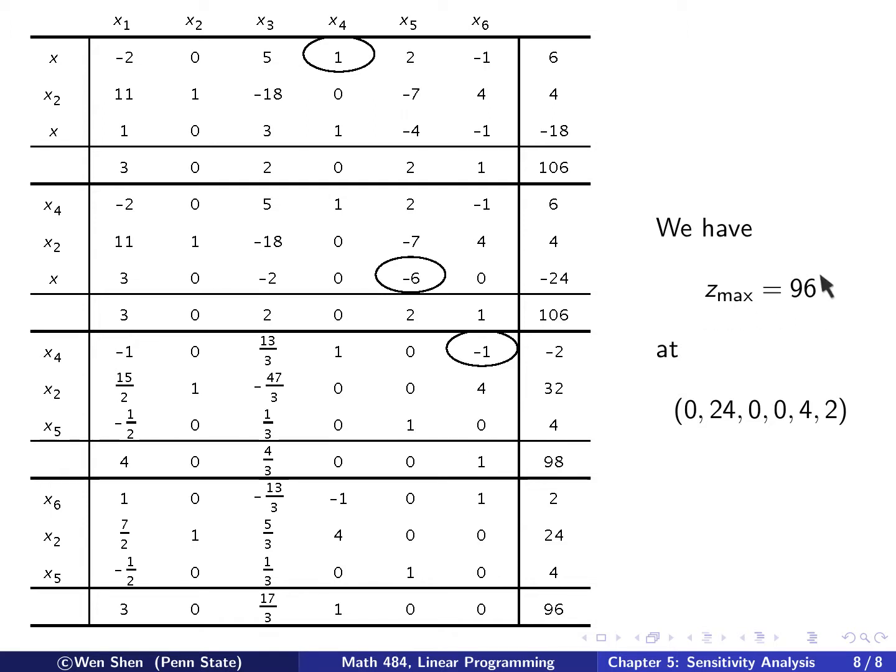Then we can conclude. We write out the Z max, the optimal value, is here. And it's obtained at these three will be X6, X2, X5, these three values. And the other X's are 0. So you write out here, X2, X5, X6. And these are 0. And that's it.